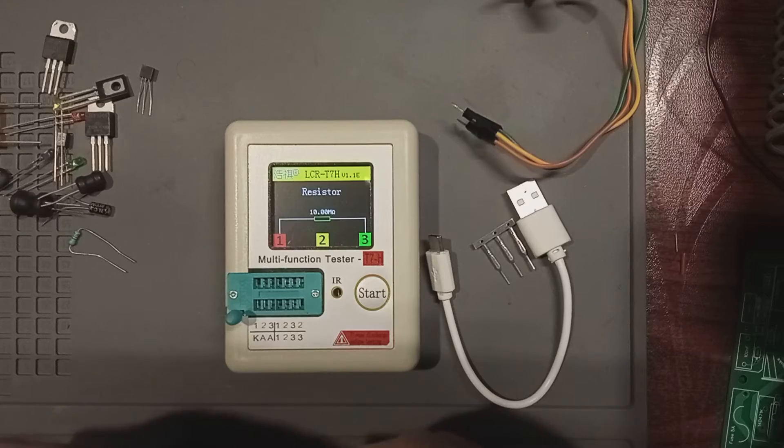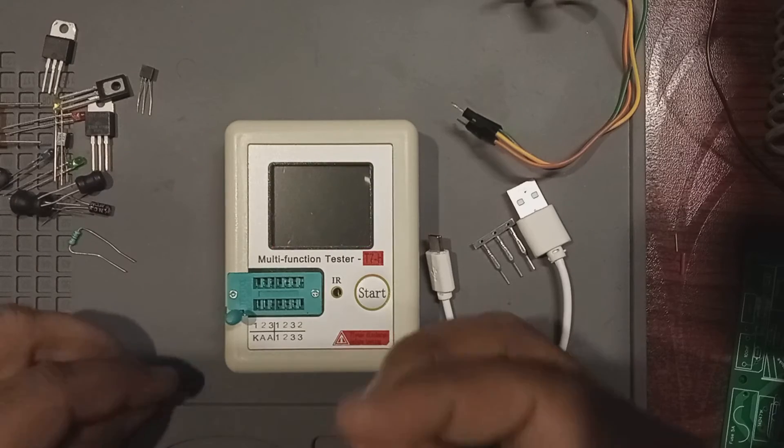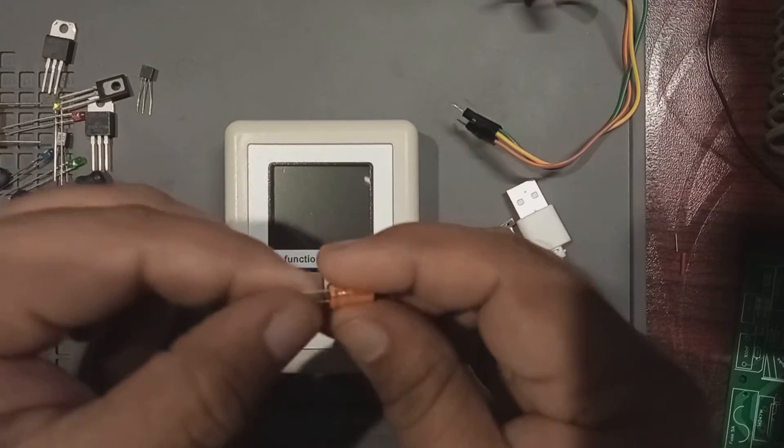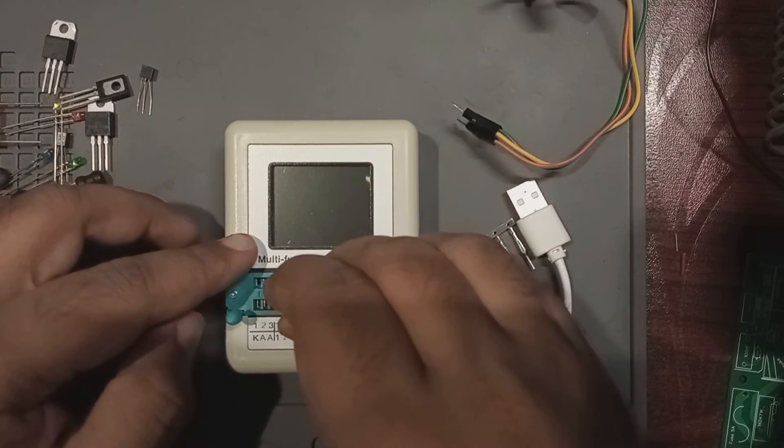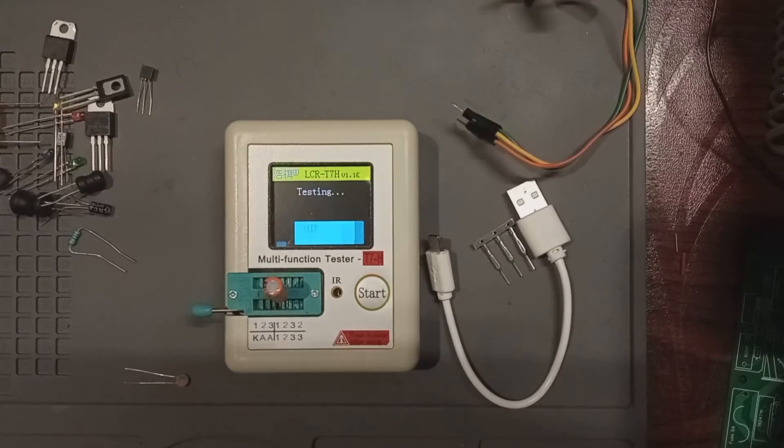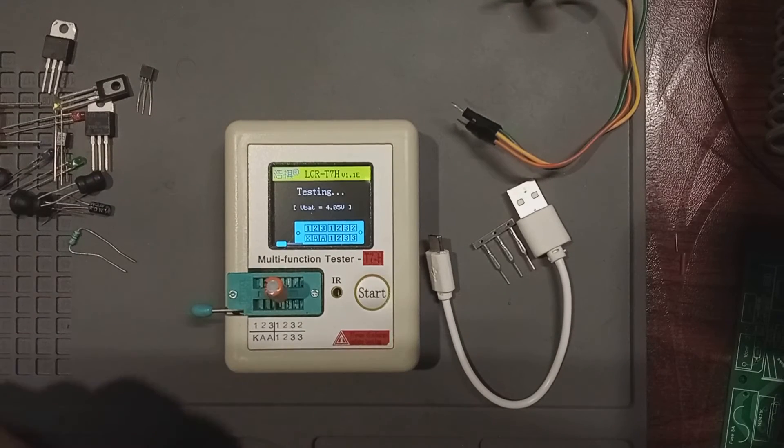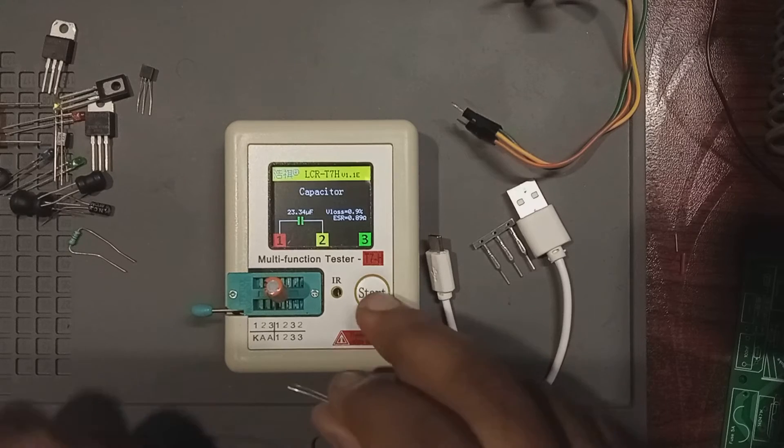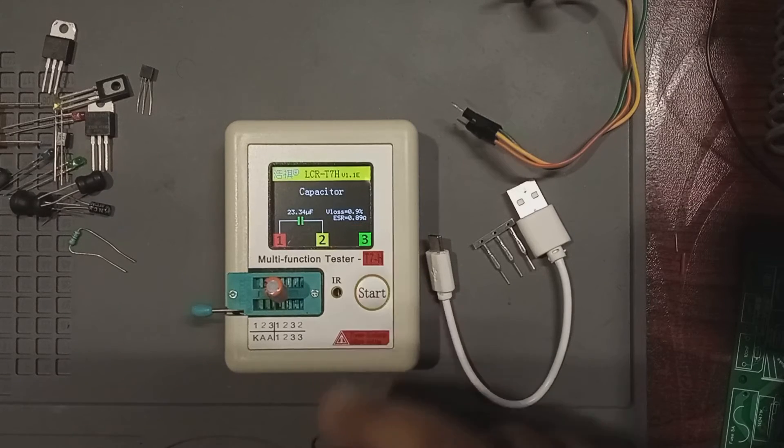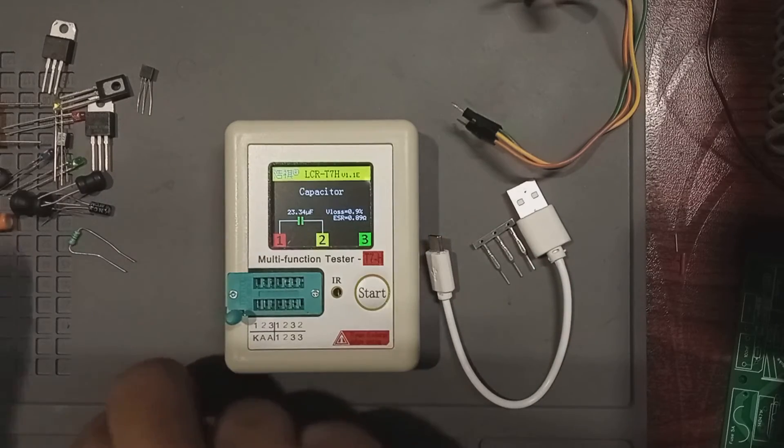Now let's start measuring a few more capacitors. Let's start with this 22 microfarad capacitor here. Connect it and wait for a few seconds. It is detected as 23.34 microfarad capacitor, which is pretty close to 24 microfarad, and it has an ESR value of 0.09 ohms and V loss of 0.9%.